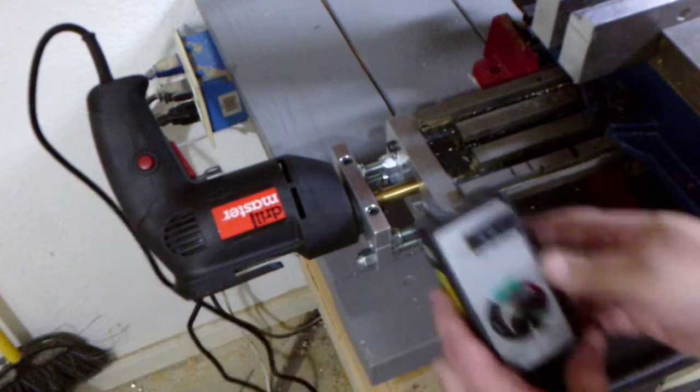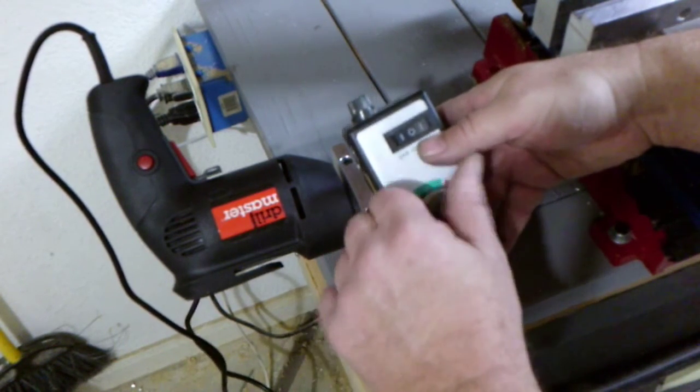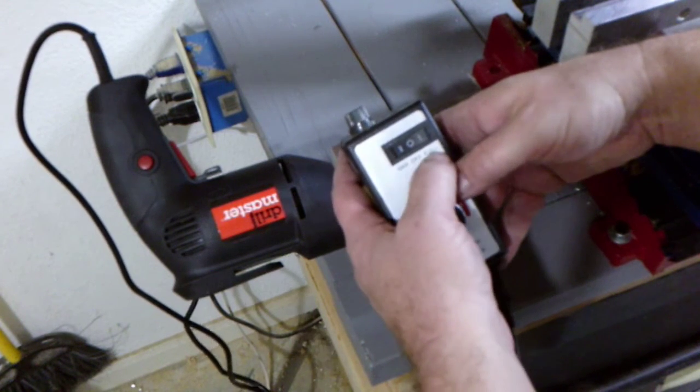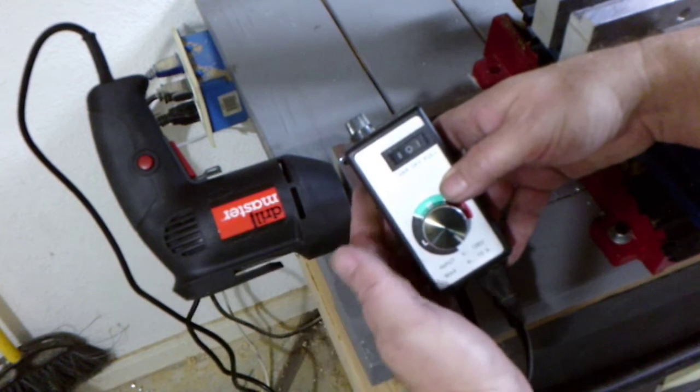The speed controller has a knob to vary the speed and a three-way switch for variable, off or full power. Don't use the full power position.